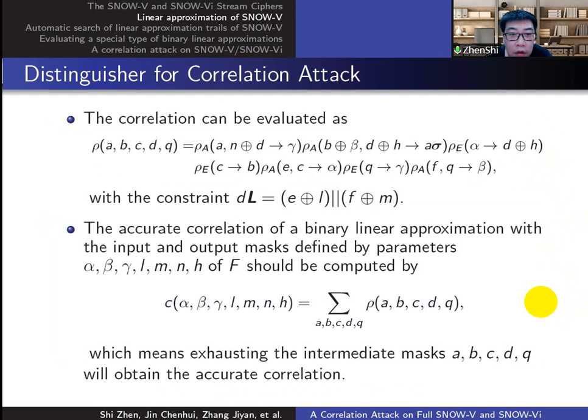For SNOW-5, we can get the accurate correlation by exhausting the intermediate masks A, B, C, D, and Q.